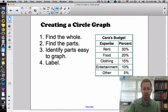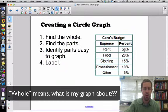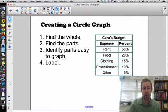We're going to find the whole, which is our Cara's budget. We're going to identify the parts, which is rent, food, clothing, entertainment, and other. And then identify what's easy to graph first. And then we write those down.